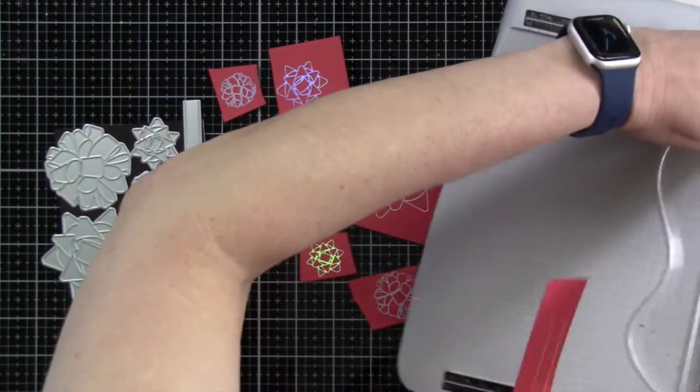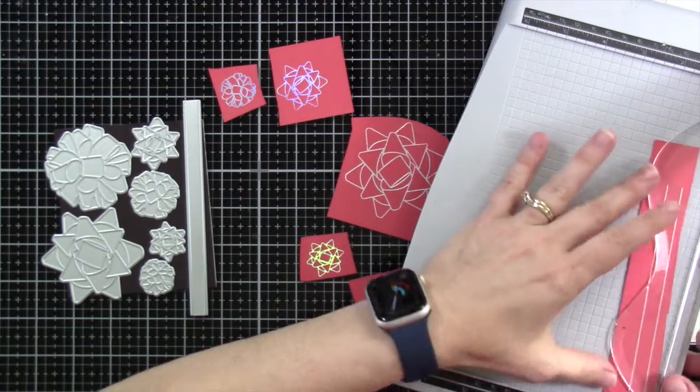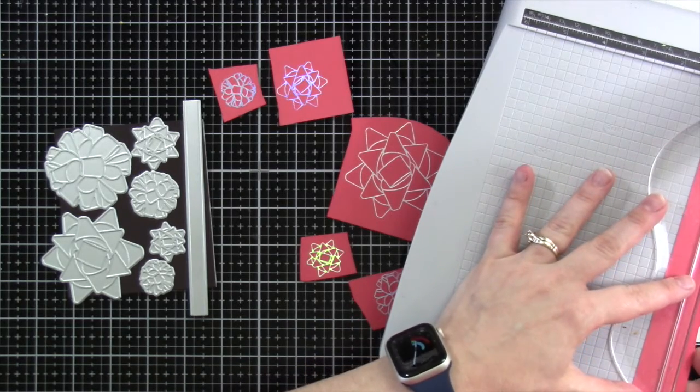For the ribbon piece, this straight ribbon piece, I'm just going to use my guillotine trimmer to trim around the edge.